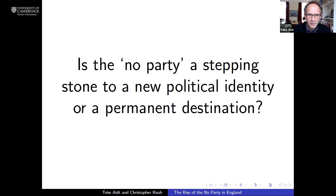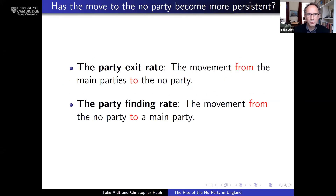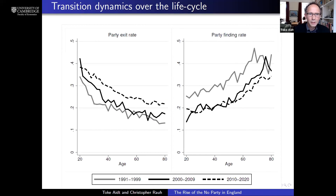Behind this process is a movement of individuals who previously identified with political parties and then stopped, starting to identify with no party. A natural question is whether that process is more like a stepping stone to some new identity or more like a permanent destination. To get insights into this, we calculate two rates: the party exit rate, capturing movement from the main parties to the no party, and the party finding rate, capturing movement from the no party back to the main parties.